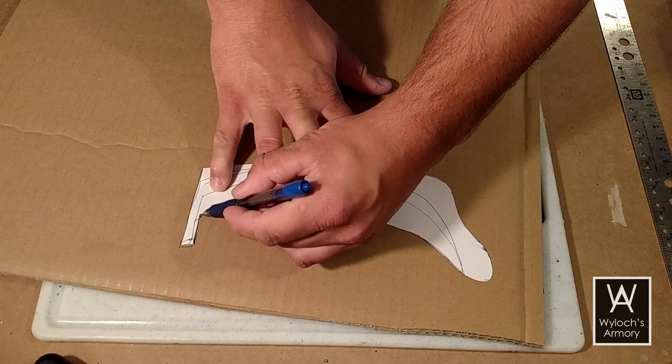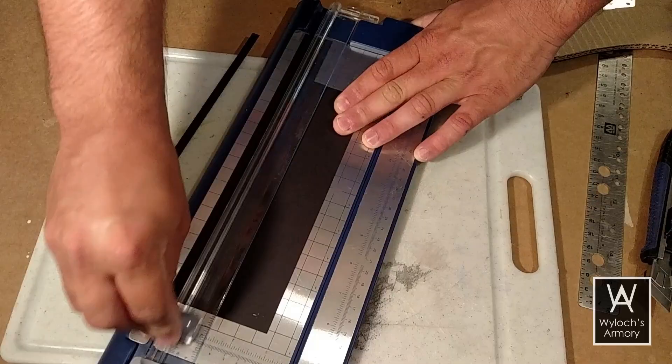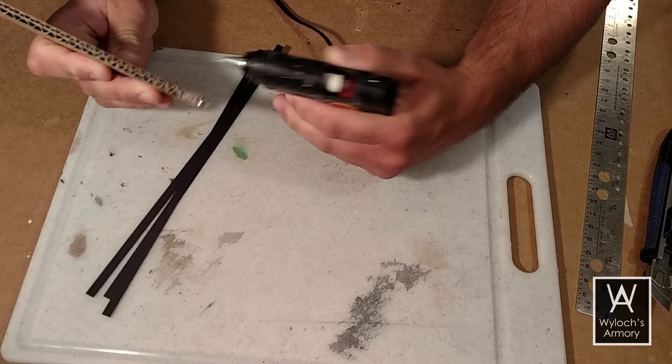Cut out the foundation piece, trace it onto double corrugated cardboard, and cut that out and apply corrugation cladding.